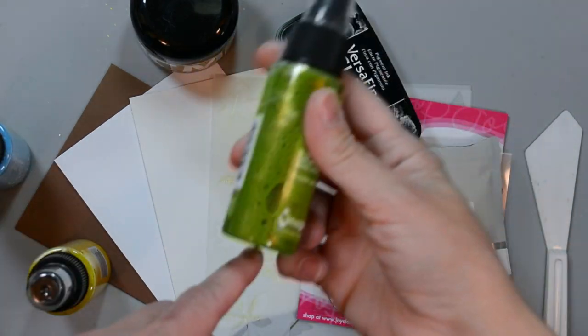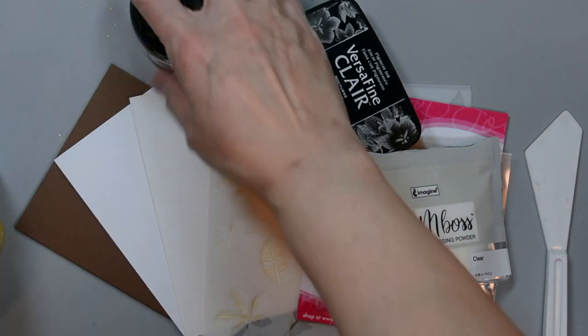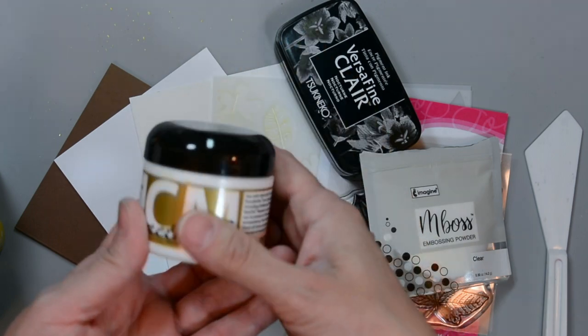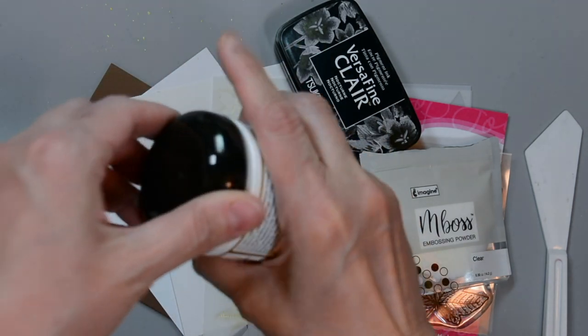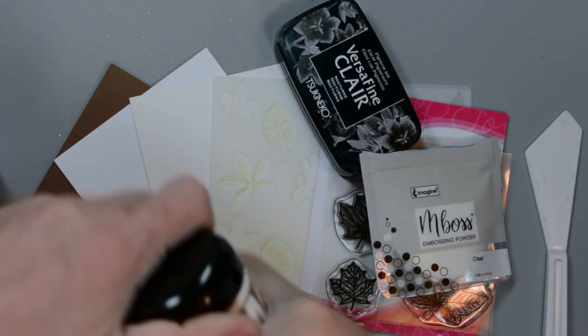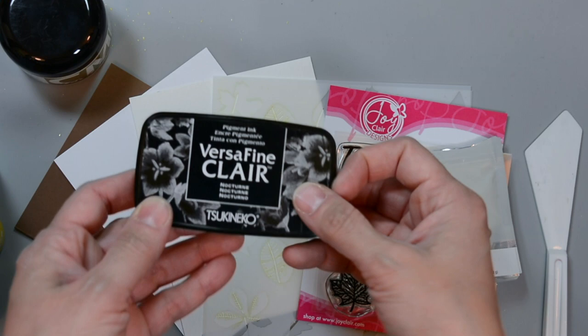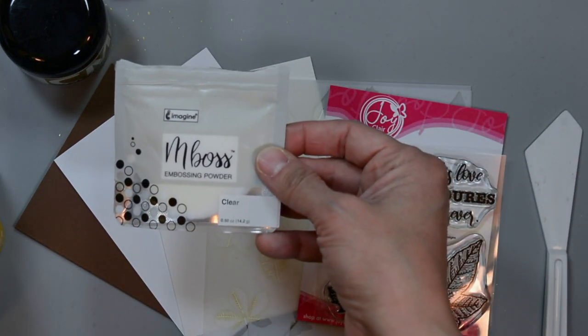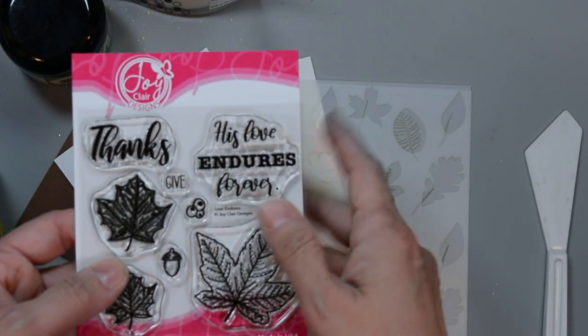Before you use it, just give it a good shake and once it's all incorporated, go ahead and spray it onto your project. We'll also be using Creative Medium in Metallic Gold. This is a texture paste and it dries to a beautiful shine. We'll be using some VersaFine Clair in Nocturne. This is a nice rich dark ink and we'll be using embossing powder in clear because I'll be embossing our stamp set today.